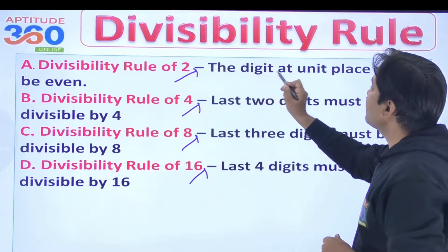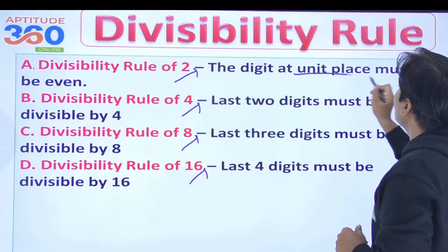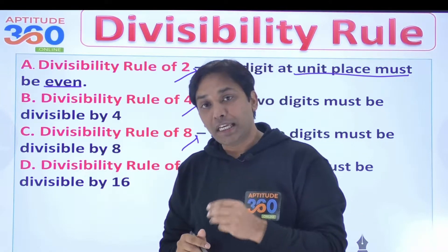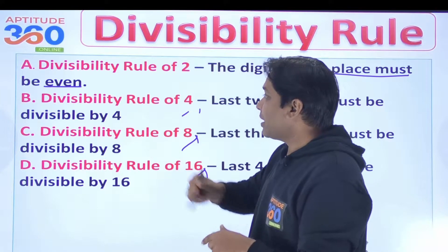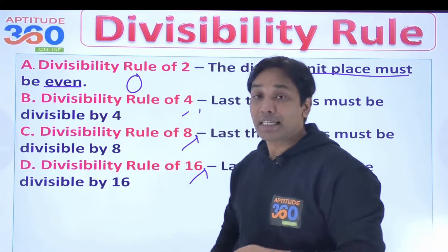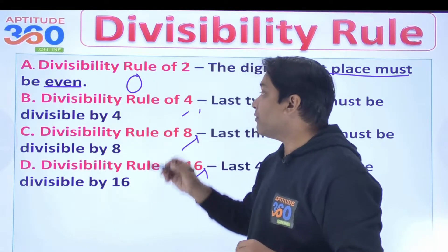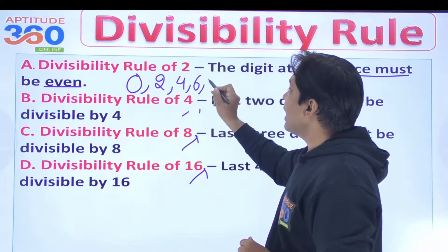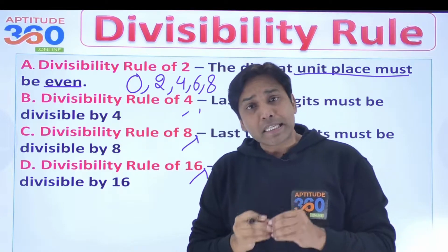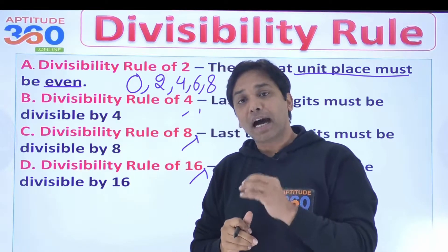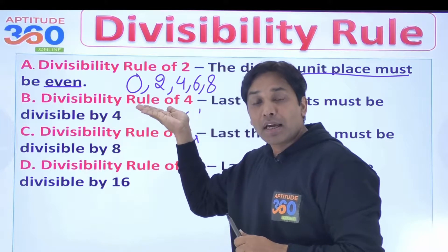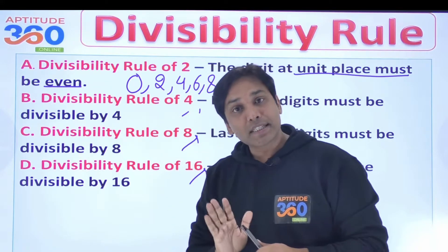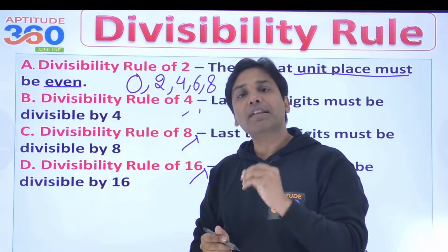What is the divisibility rule of 2? The digit at the unit place must be even. 0 is an even number, then 2, 4, 6, and 8. If any number has these digits at the end, that number will necessarily be divisible by 2.